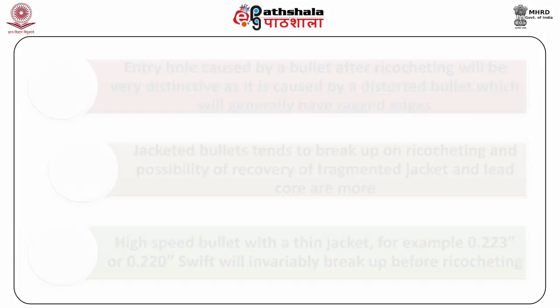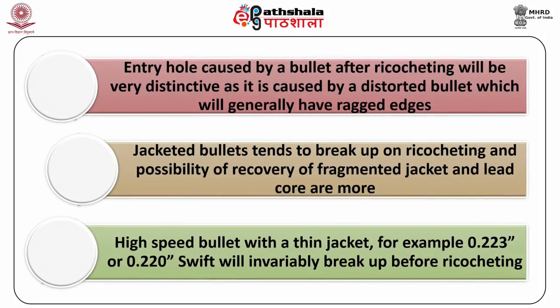Wounds and ricocheting: wounds produced by bullets ricocheting from hard surfaces can be easily identified. The entry hole caused by a bullet after ricocheting will be very distinctive as it is caused by a distorted bullet, which will generally have ragged edges. After it enters the body, the bullet, due to its inherent unstable condition, tumbles end over end and would leave a large and irregular channel. Jacketed bullets tend to break up on ricocheting and the possibility of recovery of fragmented jacket and lead core is higher. High-speed bullets with a thin jacket, e.g. 0.223 or 0.220 Swift, will invariably break up before ricocheting.